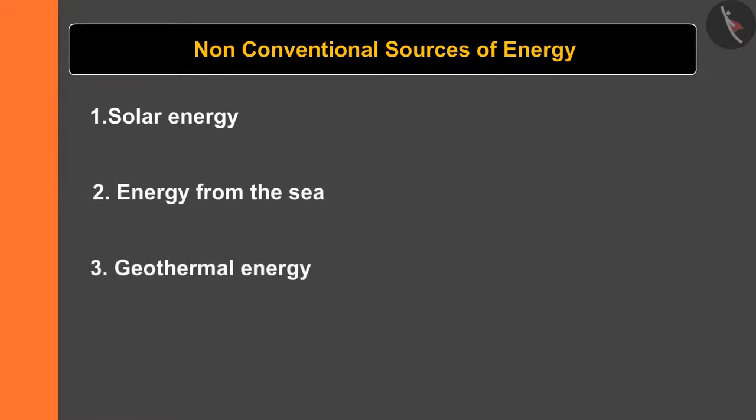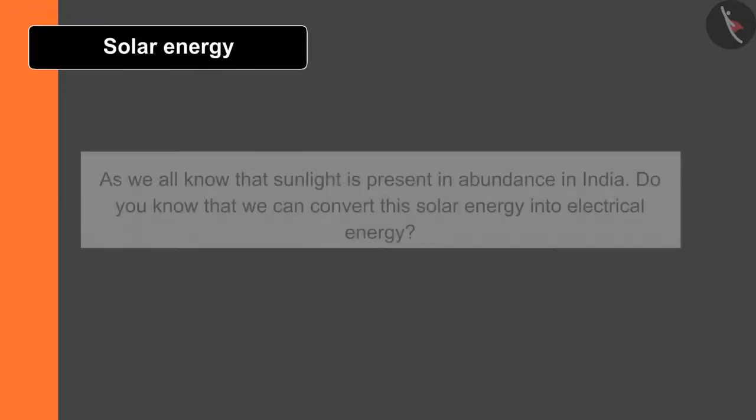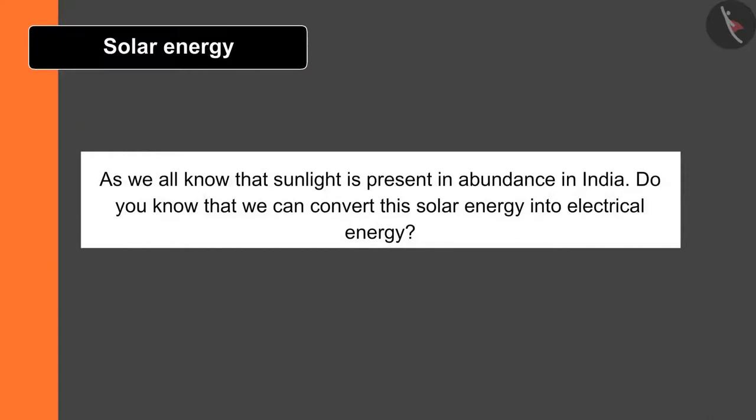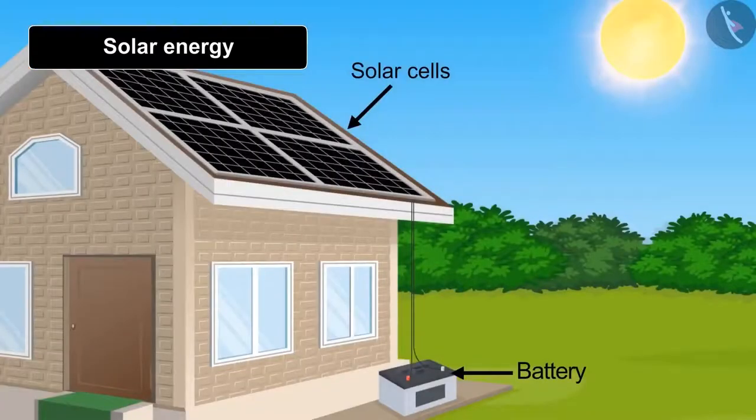Let's understand each source one by one. As we all know that sunlight is present in abundance in India. Do you know that we can convert the solar energy into electrical energy? To convert this energy, solar cells of silicon are kept in the sunlight.